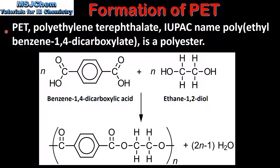PET, or polyethylene terephthalate, which has the IUPAC name polyethylbenzene 1,4-dicarboxylate, is a polyester. In the previous video we saw that polyesters are condensation polymers formed between a dicarboxylic acid and a diol. PET is formed in the reaction between benzene 1,4-dicarboxylic acid and ethane 1,2-diol.